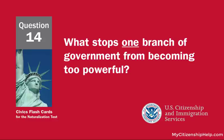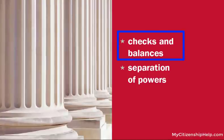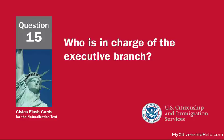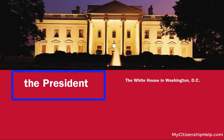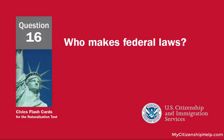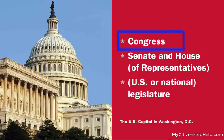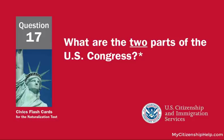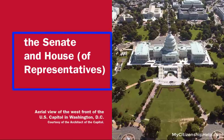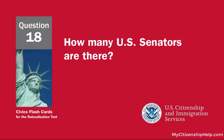Name one branch or part of the government. Congress. What stops one branch of government from becoming too powerful? Checks and balances. Who is in charge of the executive branch? The president. Who makes federal laws? Congress. What are the two parts of Congress? The Senate and House of Representatives.